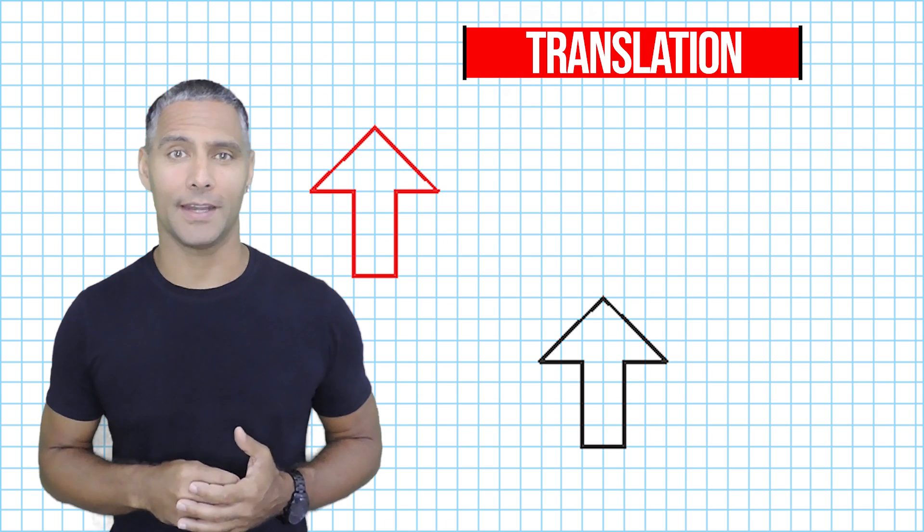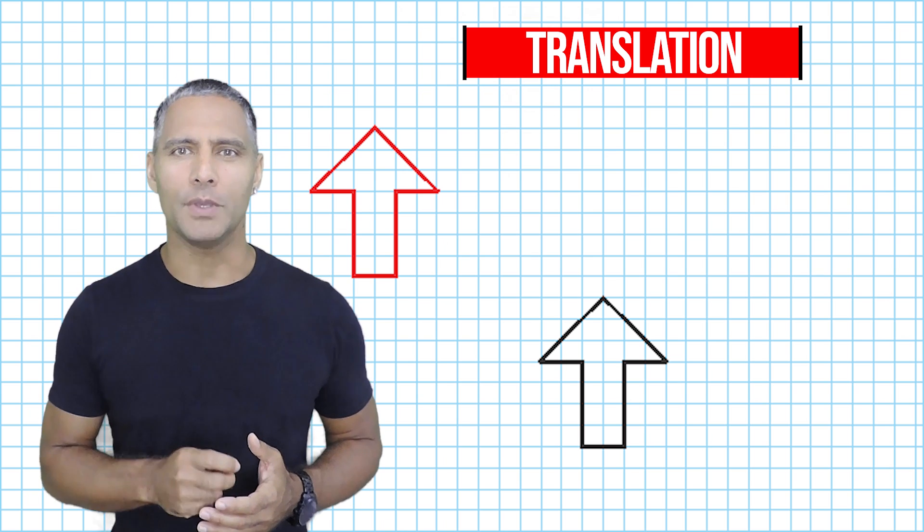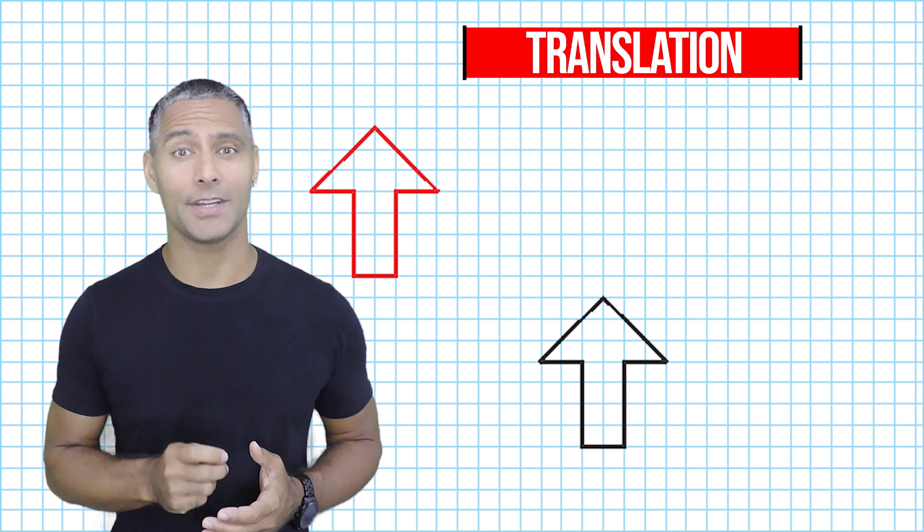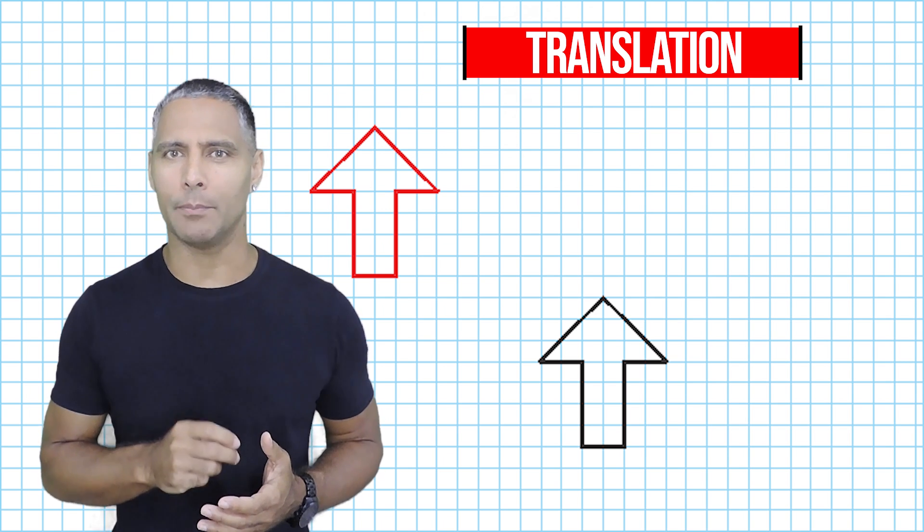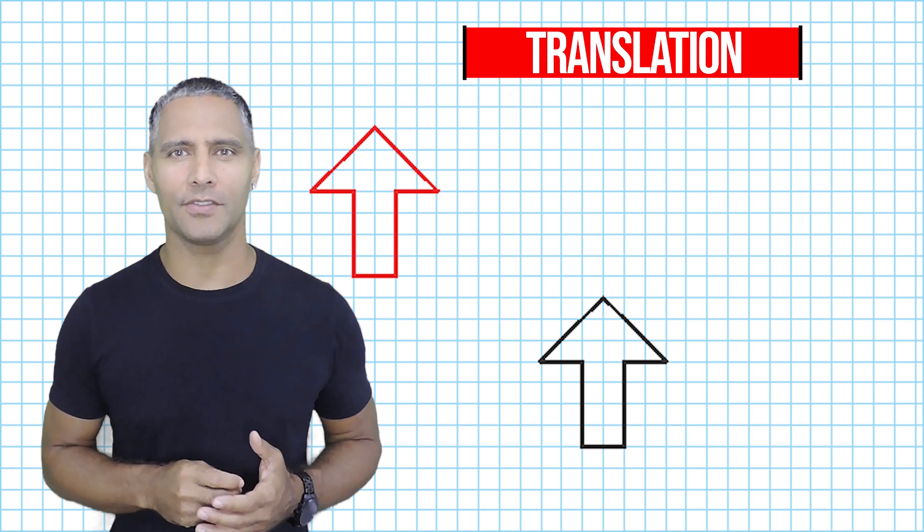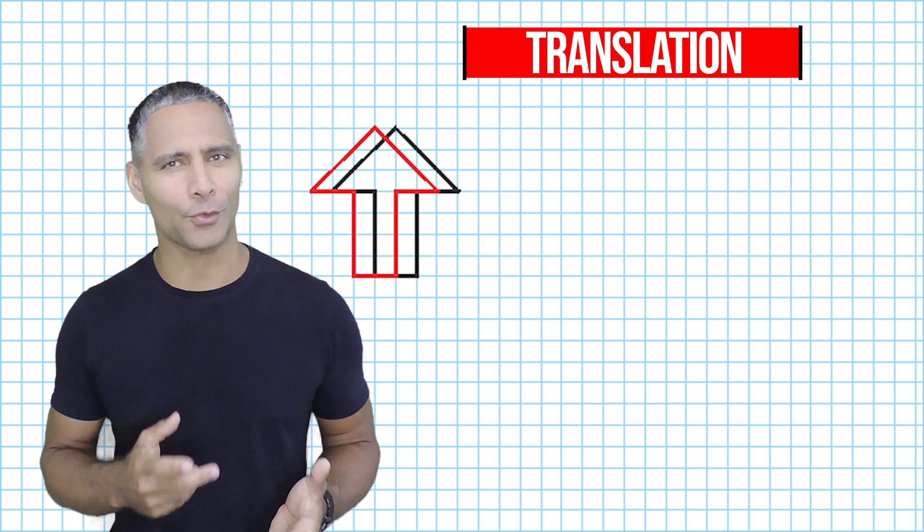For a transformation to be identified as a translation, here is what must be true. The shape must be oriented in the same direction after it is moved. Notice that the arrow on the screen remained pointed upwards after it was translated. Also notice how it appeared as if we were sliding the arrow across the screen.